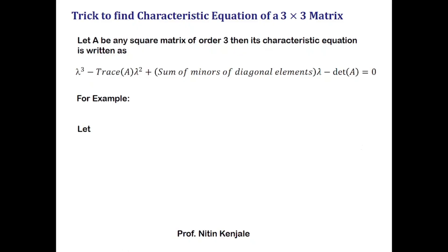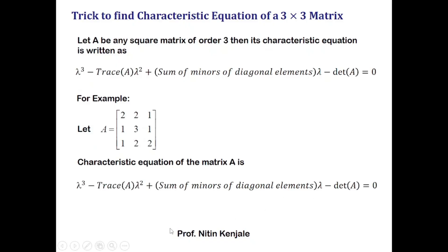Consider this 3×3 matrix. We just have to put values of trace of A, sum of minors of diagonal elements, and determinant of A into the equation. Here, trace of A is 2 plus 3 plus 2, that is 7. The diagonal elements are 2, 3, and 2. Minor of 2 is 3 times 2 minus 1 times 2, that is 4. Minor of 3 is 2 times 2 minus 1 times 1, that is 3. So the sum of minors of diagonal elements is 4 plus 3 plus 4, which is 11.